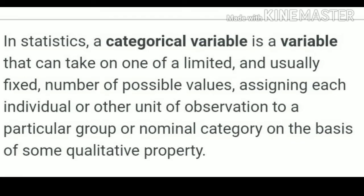The next one is categorical variable. These are variables that have only a specified set of options. For example, the variable blood group has four options: A, B, AB, and O, or eight options — A positive, A negative, B positive, B negative, O positive, O negative, AB positive, and AB negative. Variables with only two options are called dichotomous variables. For example, school enrollment can have the option yes or no. Similarly, a tri-autonomous variable will have three options — for example, employment status: employed, self-employed, or unemployed.